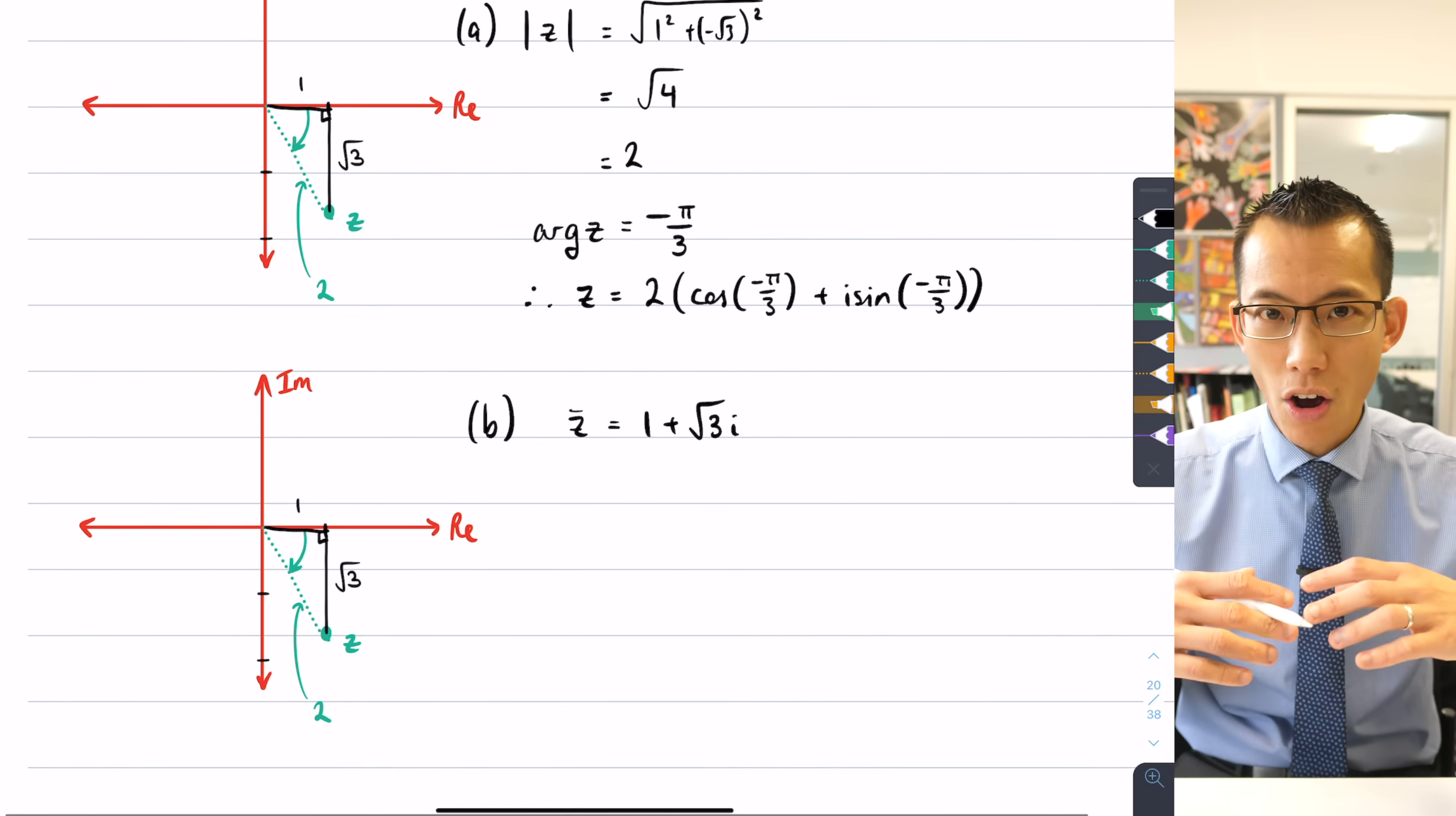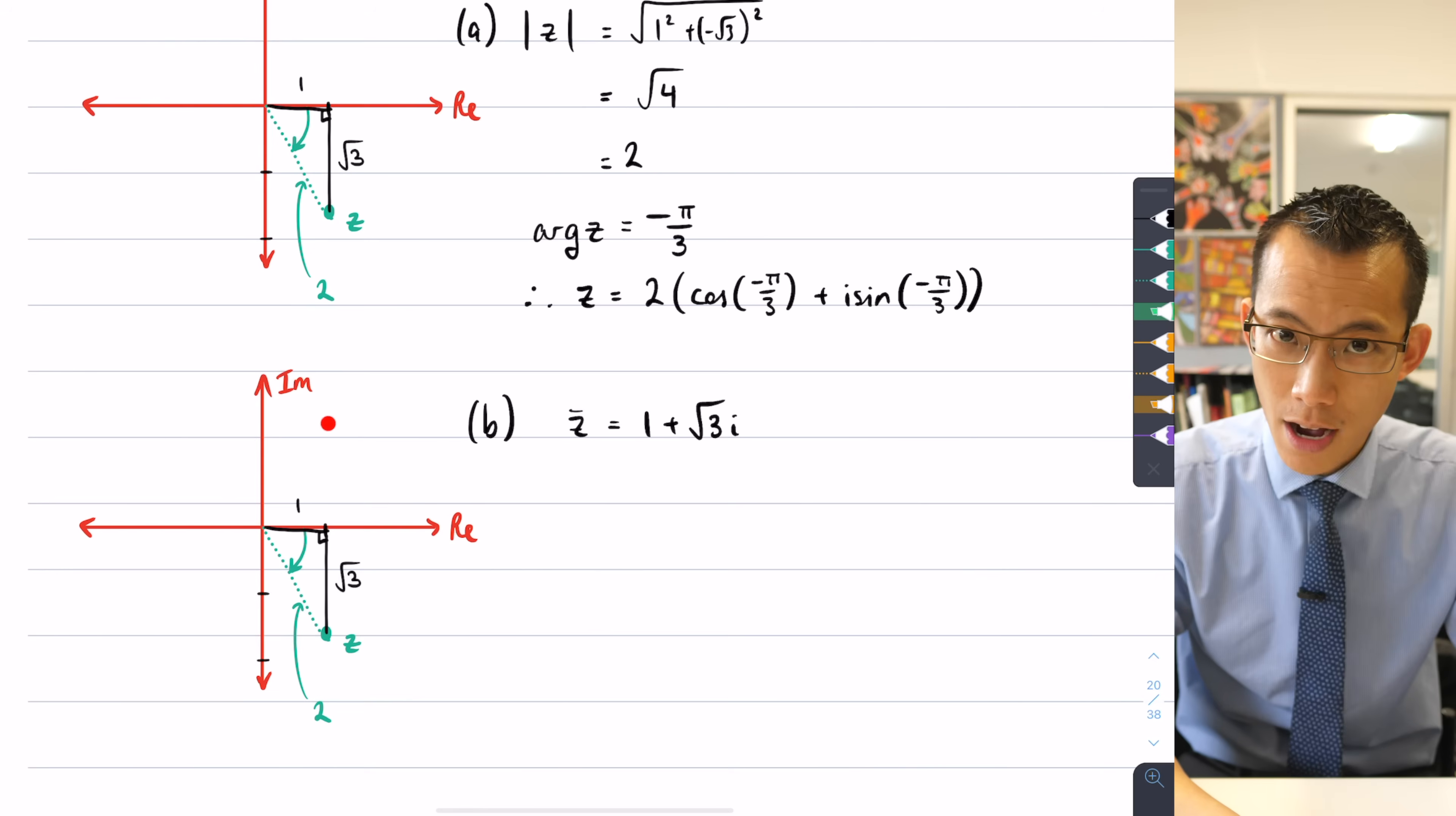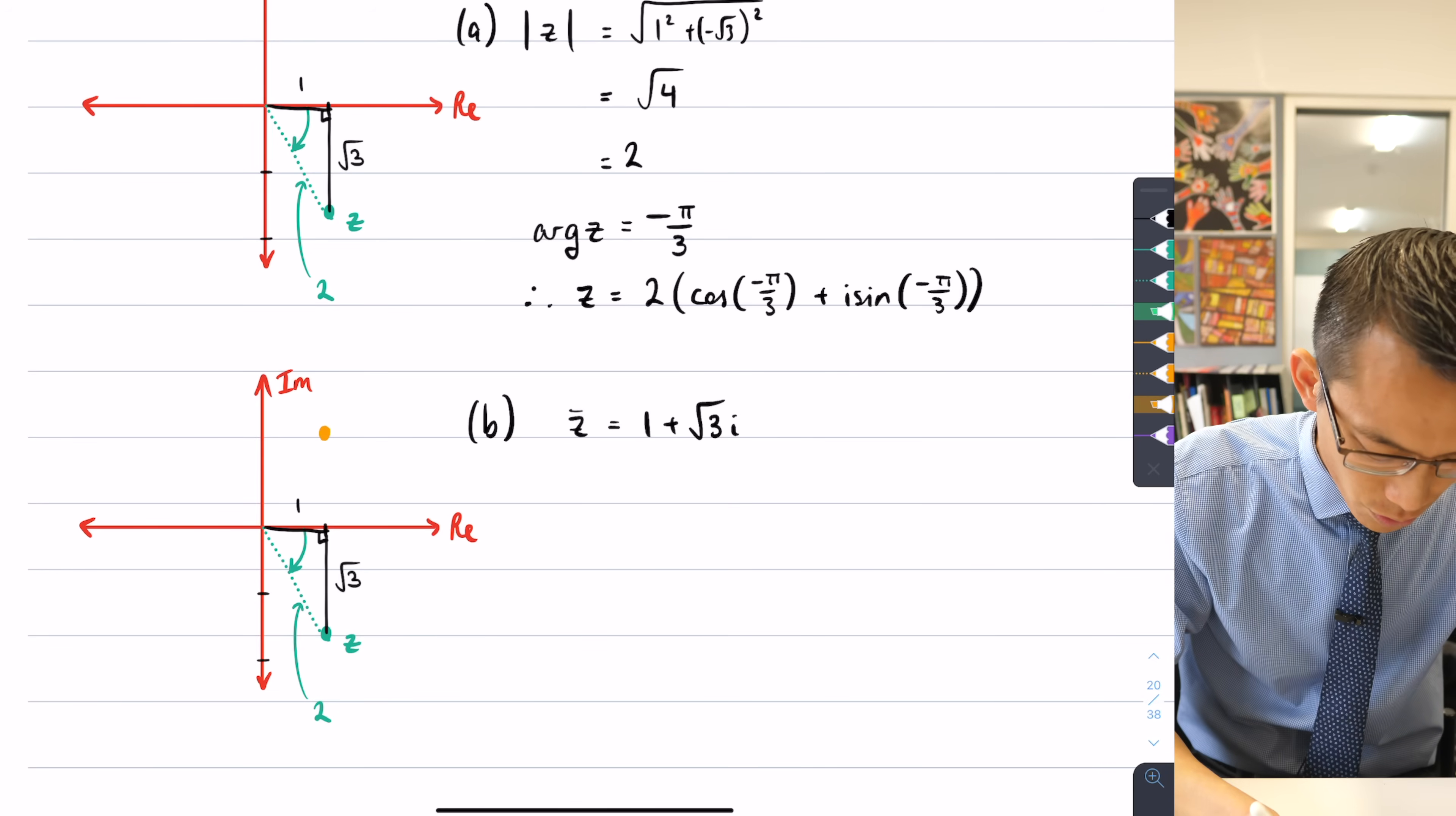That's going to be on the opposite side of the real axis. So if I grab another color here, if z is down here, then z̄ is going to be up here. So therefore, I'm going to place that over here.